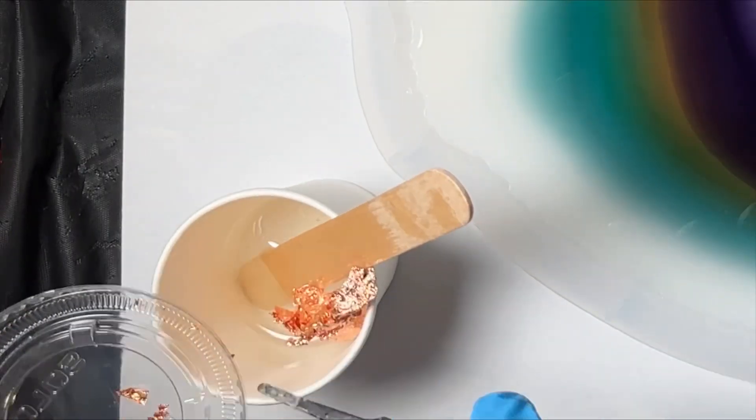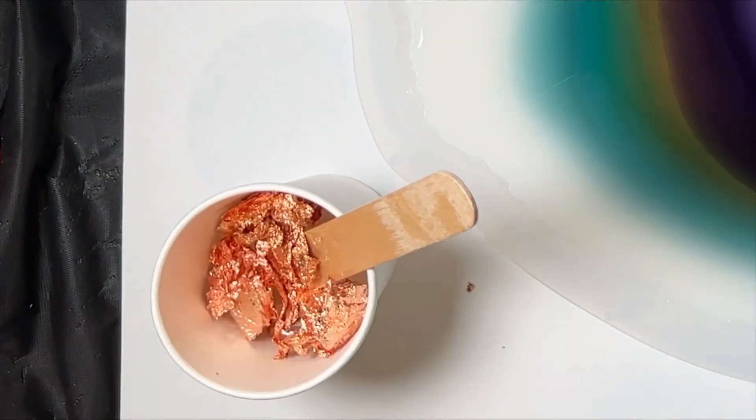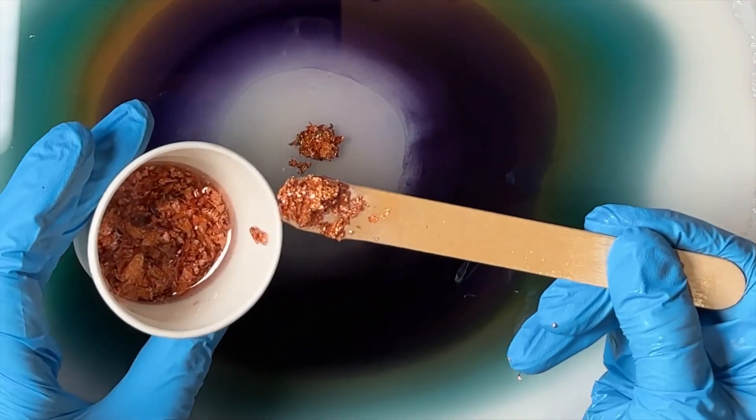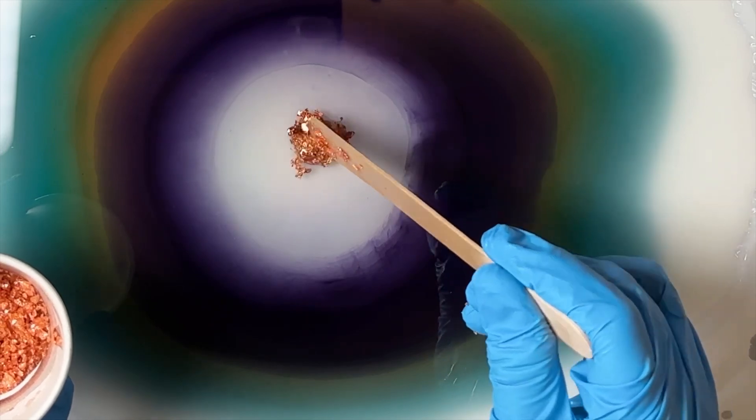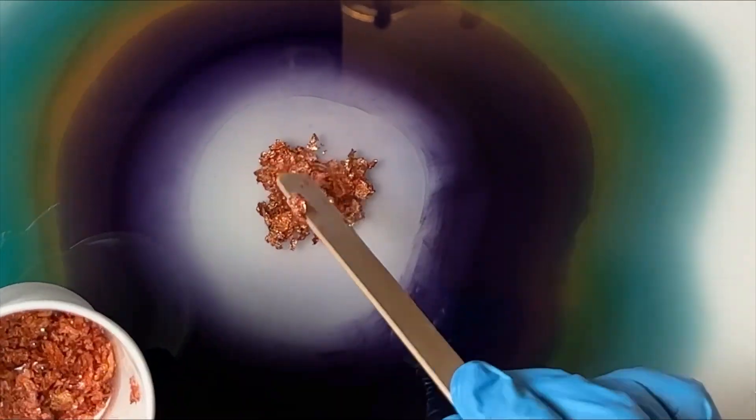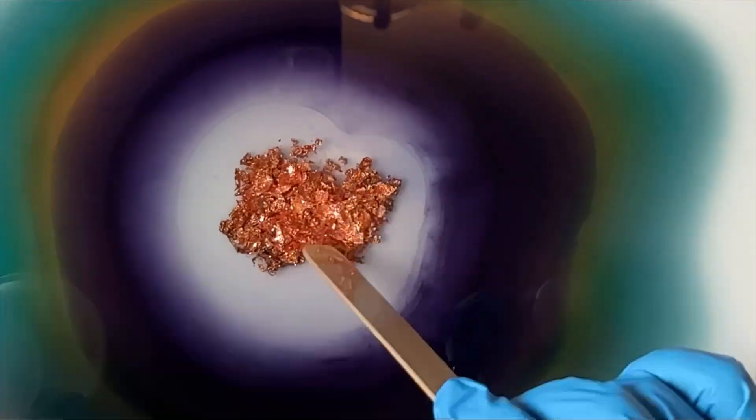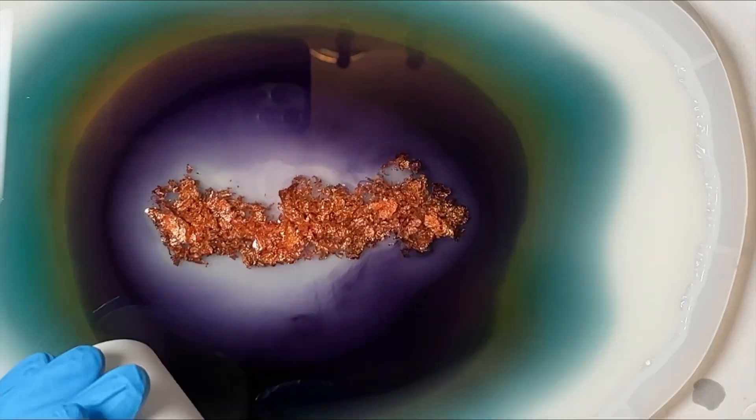Then I'm using this copper foil mixed with some resin to put right in the middle. As I started putting it in the middle, I was initially just going to put it in the center, but due to the fact this is an oval shape, I decided to go ahead and make it more of a rectangular shape.